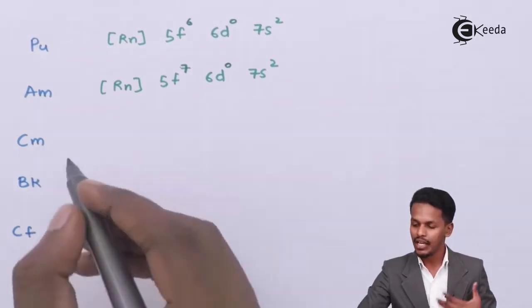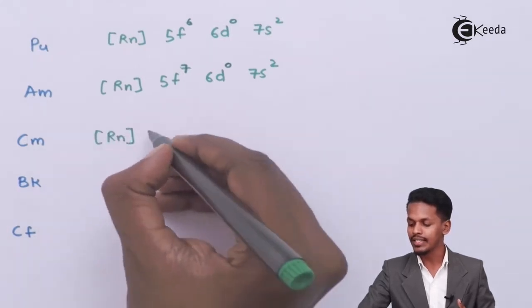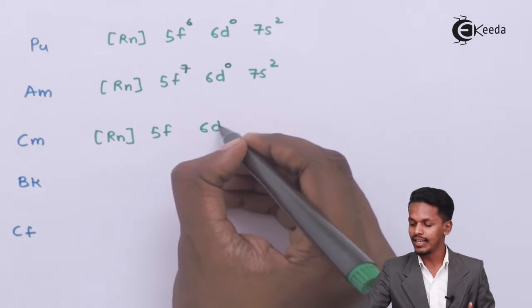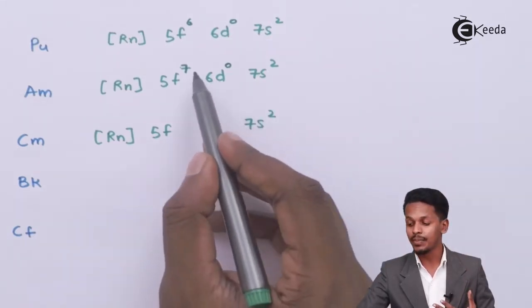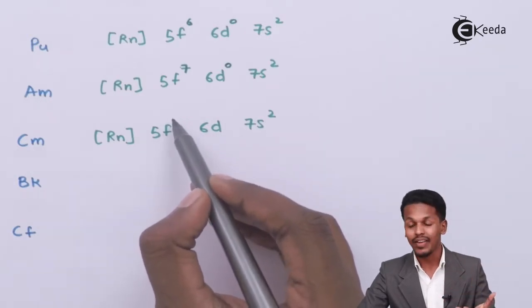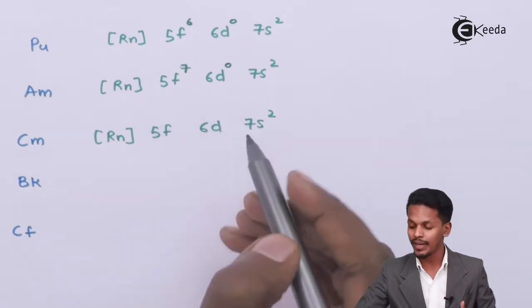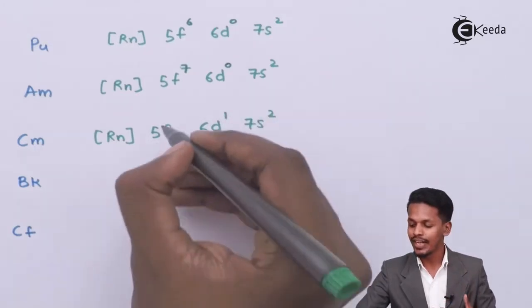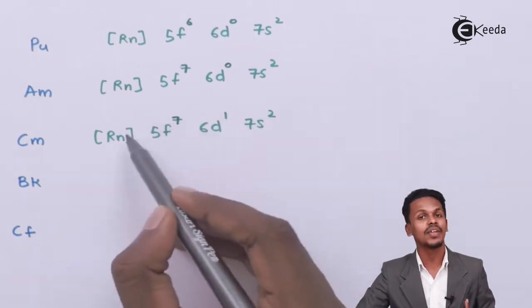For curium, the electronic configuration is [Rn] 5f⁷ 6d¹ 7s². The last electron does not get added to the 5f orbital; instead it goes to the 6d orbital. All seven electrons remain in the 5f orbital, making it very stable, and one electron occupies 6d.